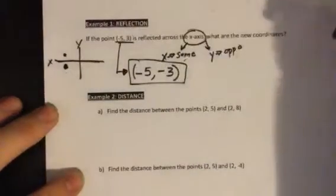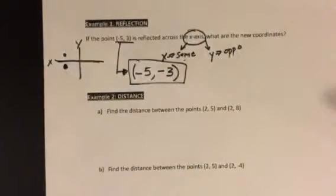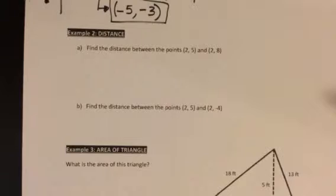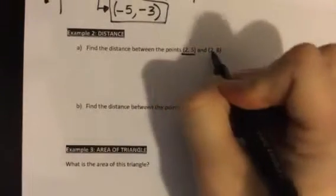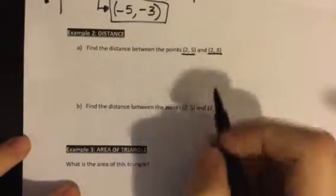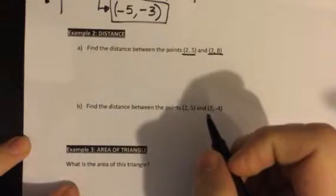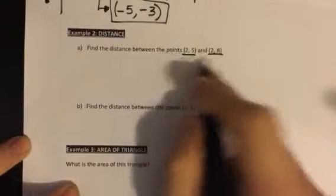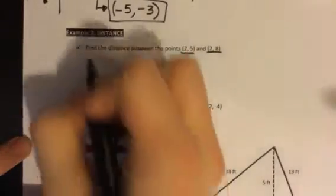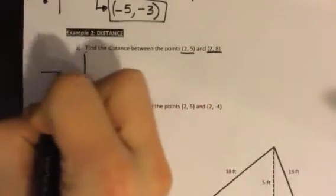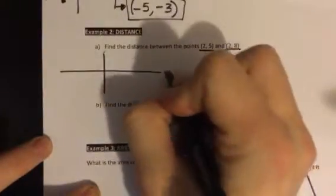Let's look at example two. These are distance problems. Part a says find the distance between the points (2, 5) and (2, 8). Now I really want us to make sure we're drawing coordinate planes on these and seeing where the points are relative to each other. So let's kind of plot these two points and estimate where they would be. Here's my coordinate plane. This is x, this is y, my two axes.